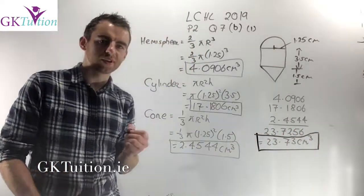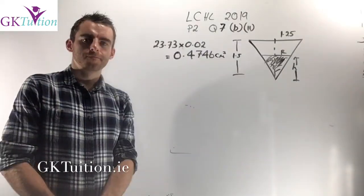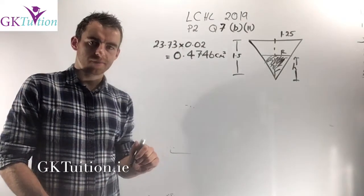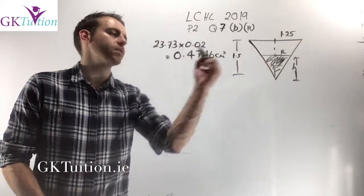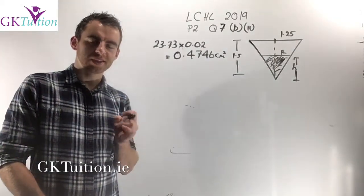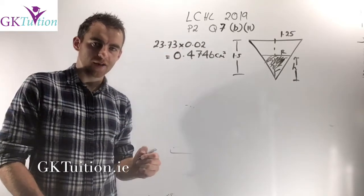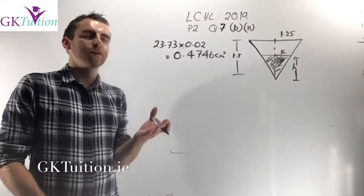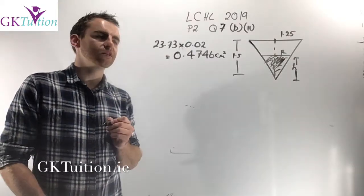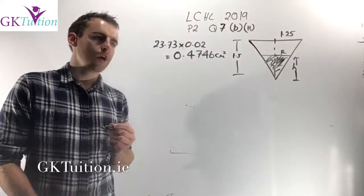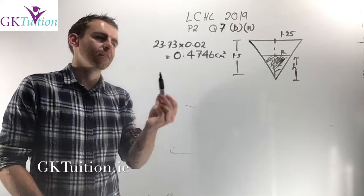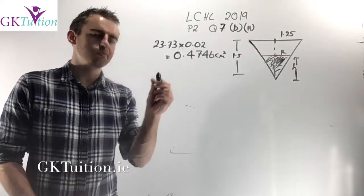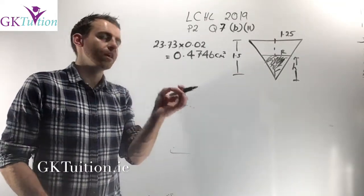In the final part, sand flows from the upper half into the lower half, and we're asked to find the height of sand in the cone when 98% of the sand has flowed out — meaning 2% remains. Taking 2% of 23.73 centimetres cubed: multiply by 0.02 to get 0.4746 cm³. This is the volume of sand remaining in the cone.